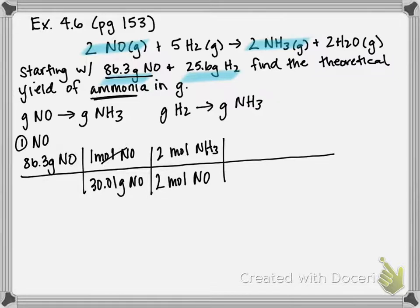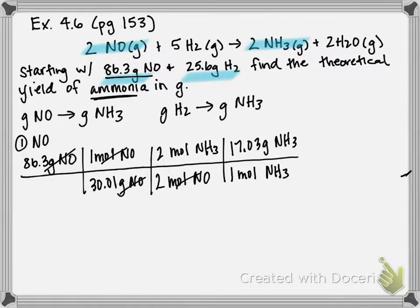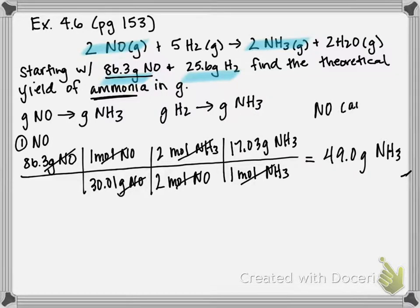Grams cancel, moles cancel, and I'm in moles of NH3. Since I ultimately want to be in grams, I'll multiply by the molar mass: one mole of NH3 contains 17.03 grams. That cancels moles of NH3. Multiplying across and dividing by the bottom, I get that NO can produce 49.0 grams of NH3.